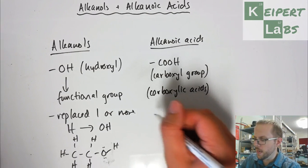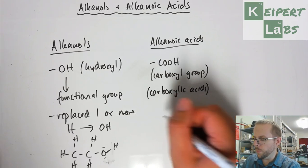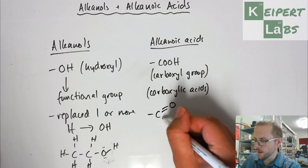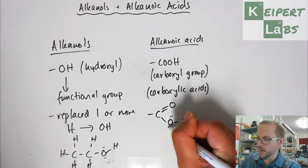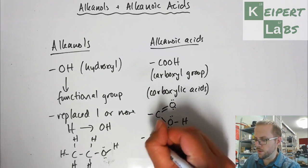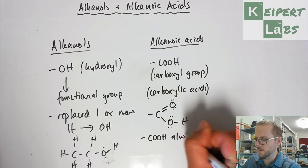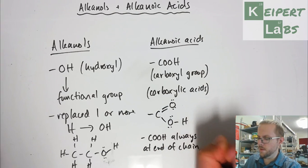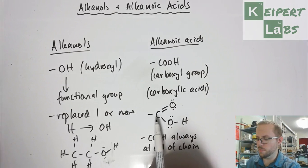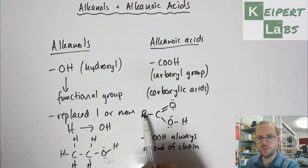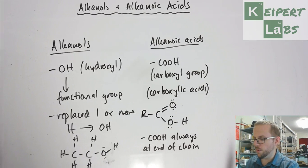The COOH group, what it actually looks like: we've got a carbon double bonded to an oxygen, and then with a hydroxyl OH group attached there. COOH is always at the end of the chain, because this carbon that makes up the COOH group can't connect to anything else. It can only make one bond to some other thing, which could be a hydrogen or a carbon chain.